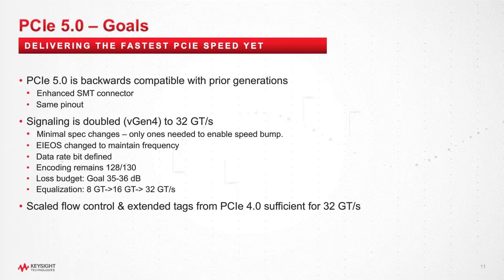The exit from electrical idle ordered set had to be adjusted for the higher frequency. We had to define a data bit to indicate the new speed of 32 gigabit. And then we've got some things that are the same, which is the encoding — we're still using the same type of encoding that we started with PCI Express 3.0, which is the 128/130-bit encoding.